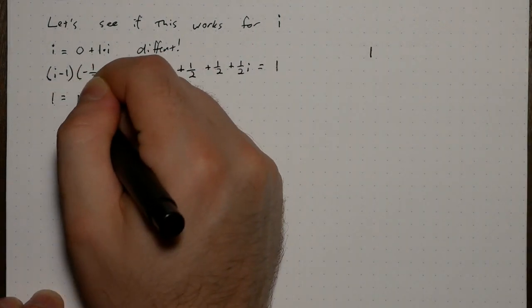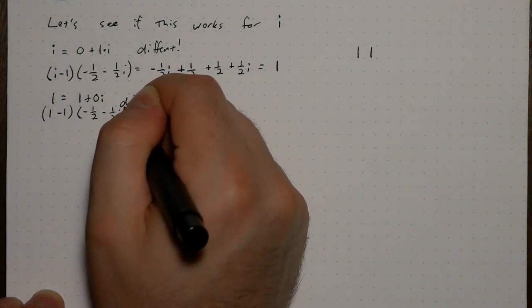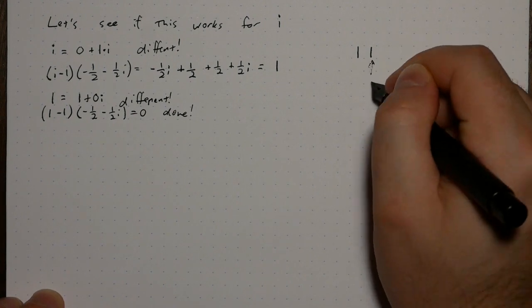Now we get 1 plus 0 times i. Different parities again. Write down 1, subtract 1, and divide by negative 1 plus i. This time is 0, and so we're done.